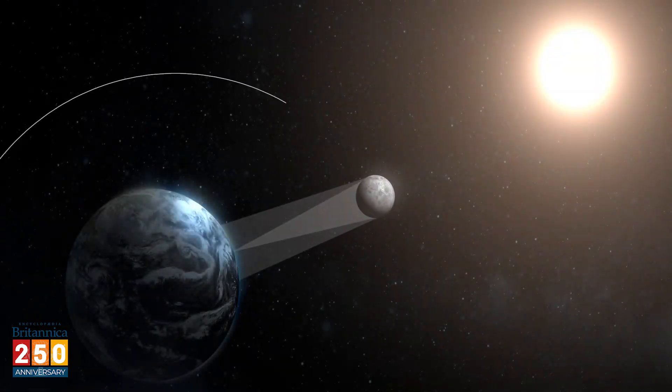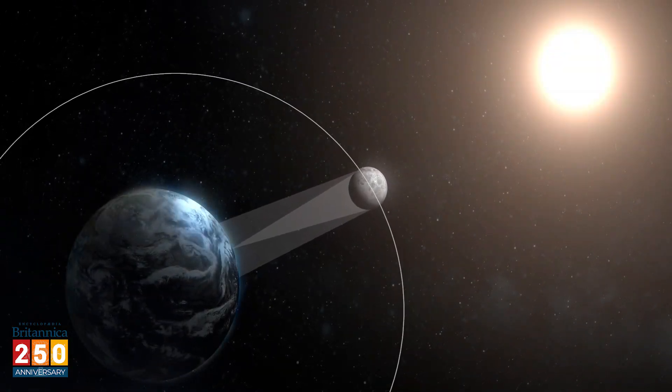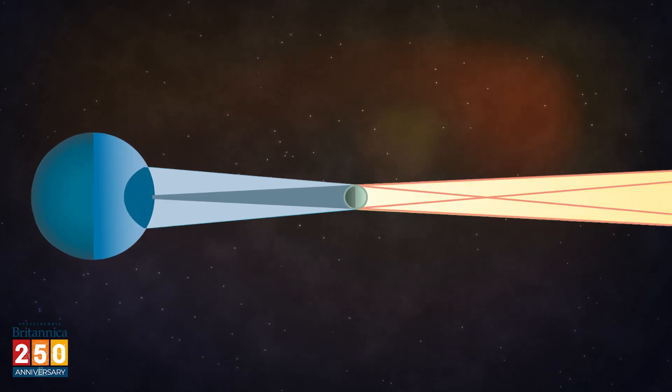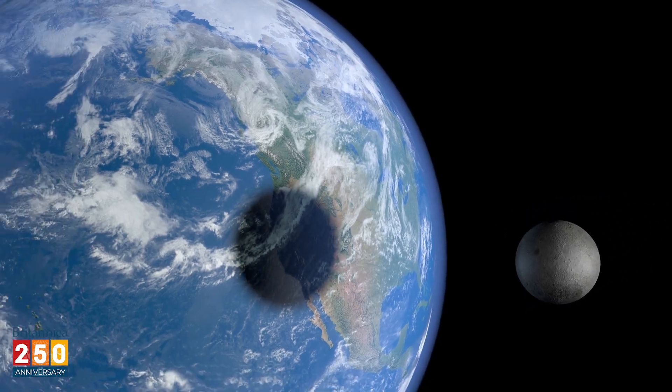Today we know that a solar eclipse is when the Moon passes between the Earth and the Sun. Not as interesting as a dragon, of course. The Moon's shadow, or umbra, is cast on the Earth, and anyone in the area of the shadow sees an eclipse.